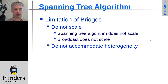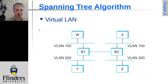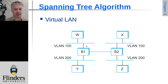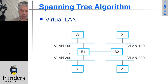Moving on to VLANs — virtual LANs — this is a mechanism to further segregate traffic and make network management more convenient. We might have two bridges linking two halves of a LAN: VLAN 100 has nodes W and X, and logically we want W and X to behave as if they're on the same LAN. Likewise, Y and Z are on VLAN 200 and should behave as if logically on the same LAN. This is what VLANs are designed to achieve.